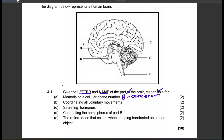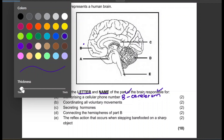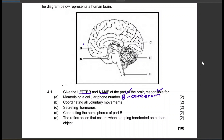Coordinating all voluntary movements — that will be D, cerebellum. So the answer is D, cerebellum. Secreting hormones — that will be the pituitary gland, which is letter A.